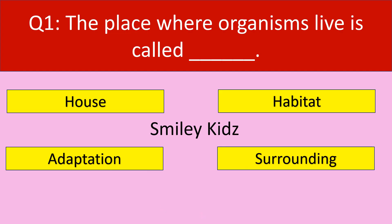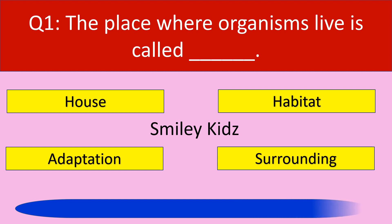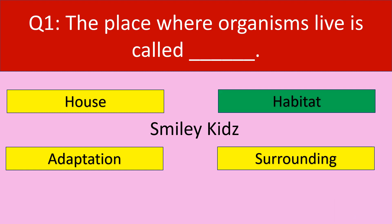Question number 1. The place where organisms live is called. Options are: house, habitat, adaptation, surrounding. Your time starts now. Your time is up. The correct answer is habitat. A place where organisms live is called habitat.